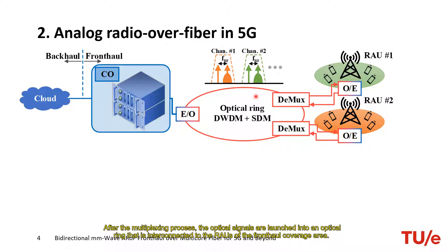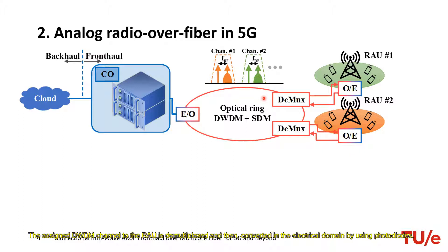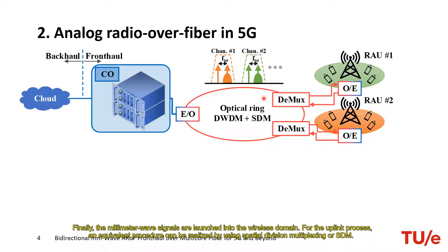The assigned DWDM channel to the RAU is demultiplexed and then converted into the electric domain by using a photodiode. By beating the two optical tones in the photodiode, the resulting electrical signal is upconverted into the millimeter wave domain. This technique highly reduces the complexity in the RAU since RF mixers and synthesizers are not needed for the upconversion. Finally, the millimeter wave signals are launched into the wireless domain. For the uplink process, an equivalent procedure can be realized by using spatial division multiplexing or SDM.